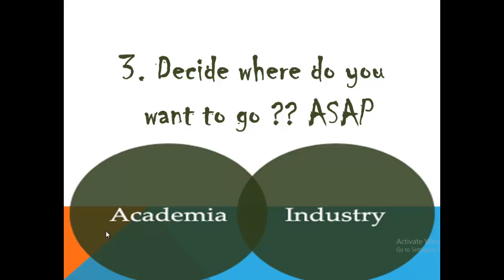Third, decide where you want to go as soon as possible. If you are a computer science student, there are two possible future pathways. You can remain in academia, becoming a teacher or researcher, or you can choose industry and become a software developer. Decide as soon as possible because both paths have different expectations and require different types of efforts. If you are a BS student, before half of your undergrad studies are completed, you must decide what your future is.